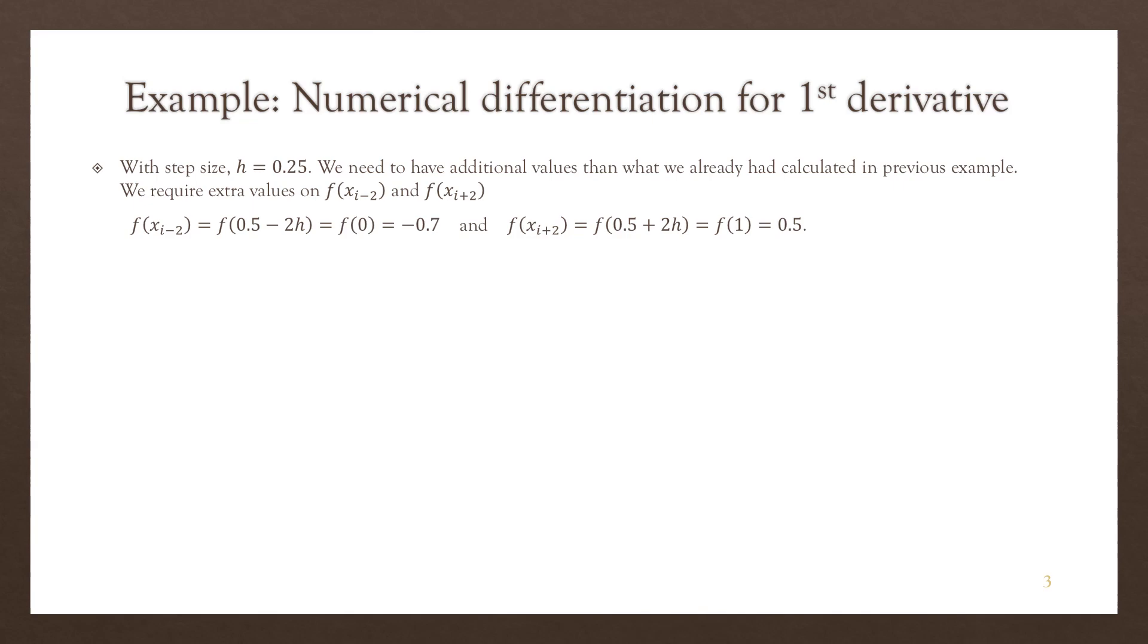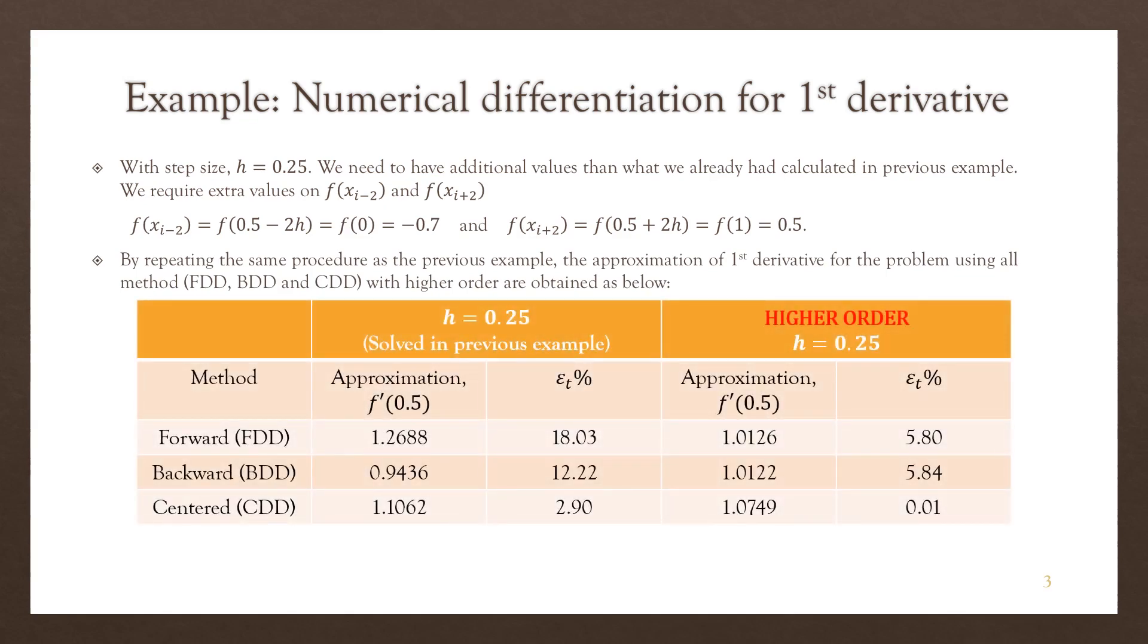Now we can use all these values and substitute into the high order formulation. And then after we do the substitution, to make it quick, we summarize all the values. Of course the formulation used is the high order. So the right column is the approximation using the higher order of FDD, BDD, and CDD. Meanwhile, the left column is the approximation using FDD, BDD, and CDD with lower accuracy or lower order. The step size is the same, so it is quite good for comparison.